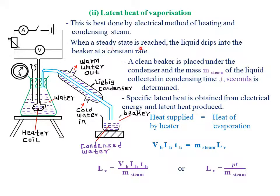This is best done by the electrical method of heating and condensing steam. When a steady state is reached, the liquid drips into the beaker at a constant rate. A clean beaker is placed under the condenser and the mass of the liquid collected in condensing time t is determined. From the law of conservation of energy, all the heat supplied by the heater must equal all the heat used in evaporating the water. The heat of evaporation is given by the mass of the steam multiplied by the latent heat of vaporization.